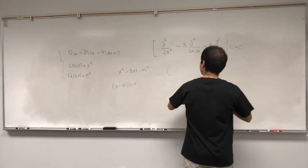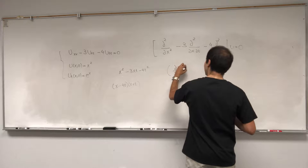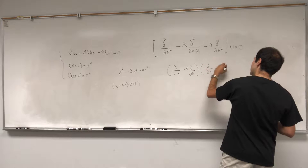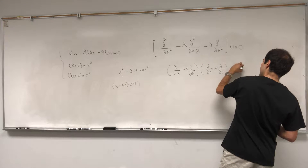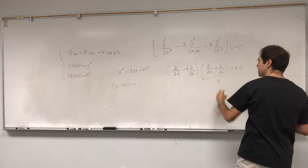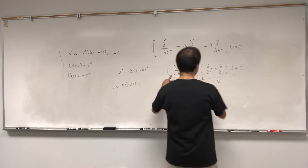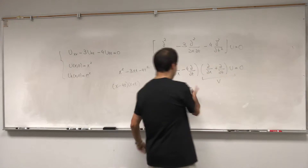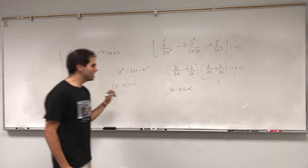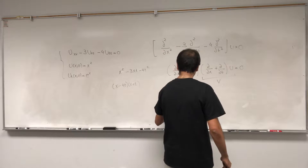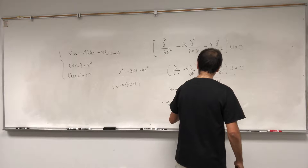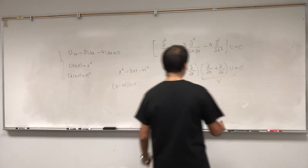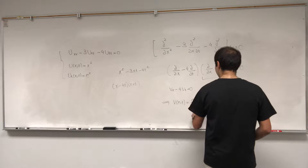So this is (d/dx minus 4·d/dt)(d/dx plus d/dt) u equals zero. If you call the inner part v, then we get vx minus 4vt equals zero. This is just a simple transport equation whose solution is v(x,t) = f(4x plus t) — let me just check: differentiating with respect to x gives four, which should cancel the minus four. Yes, 4x plus t.